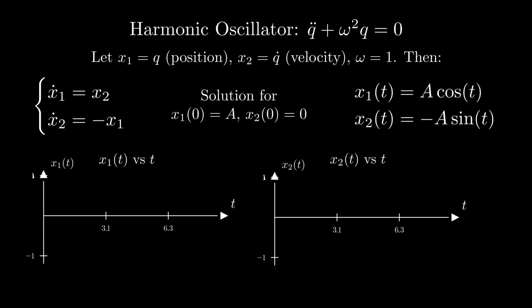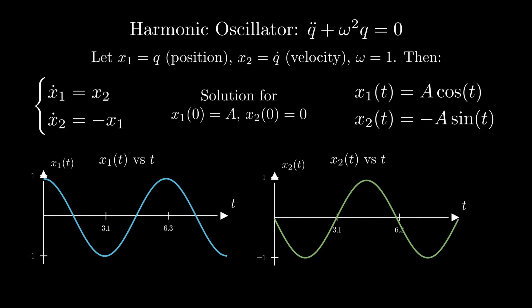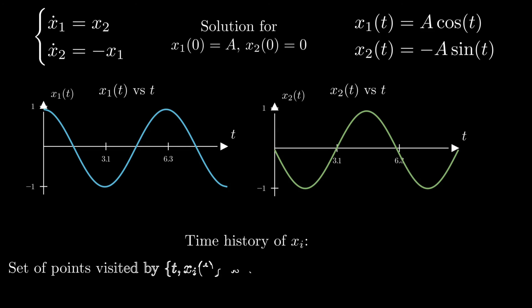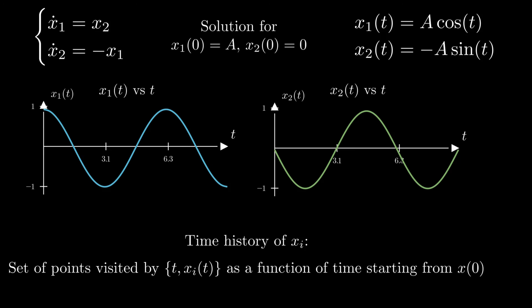It is possible to show that the solution of this system for a particular selection of initial states is given by an expression involving cosines and sines. You can verify this by taking the derivatives of the solutions x1 and x2 with respect to time to see that they satisfy the equation of the system. We can plot the components of the solution with respect to time, obtaining two graphs called time histories of x(t). A time history of the component xi is the set of points visited by the collection (t, xi(t)) as a function of time starting from x(0).